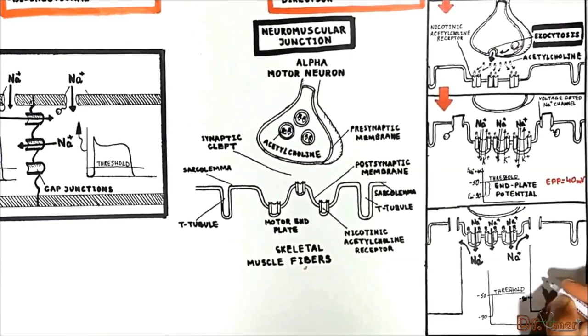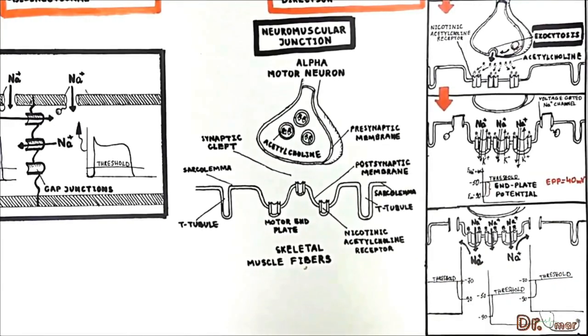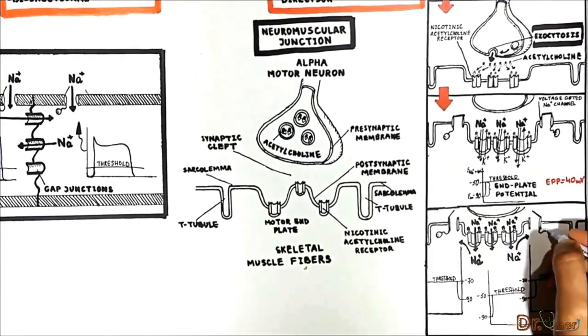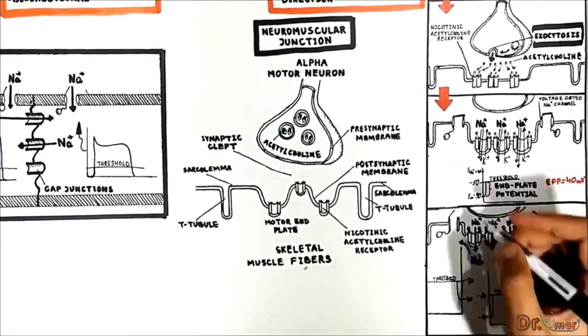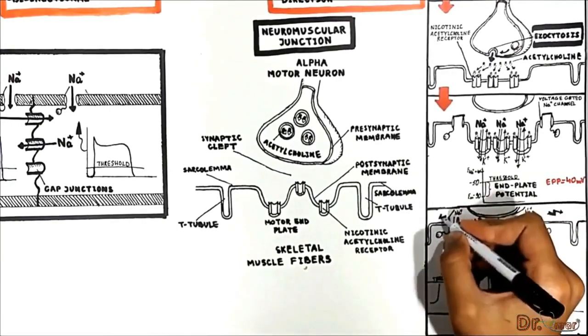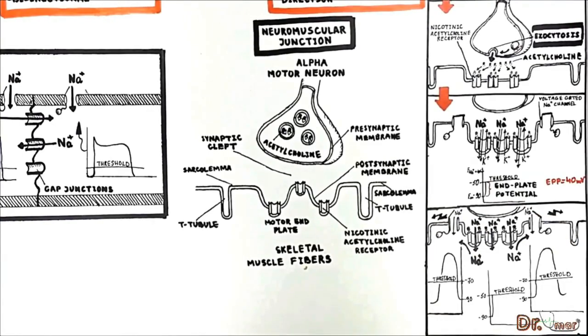The local current depolarizes the resting membrane potential in a muscle cell up to the threshold potential. As a consequence in these regions the voltage gated sodium channels open up and we get a sodium influx that initiates an action potential. This action potential then spreads in the surface of the muscle fiber and T-tubules and causes the muscle to contract.